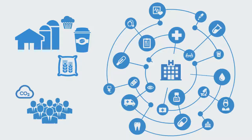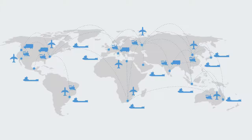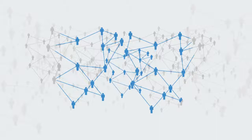Another example would be global supply chains, where we have to get many independent organizations across the value network to collaborate for the whole supply chain to function effectively. This supply chain has no real boundaries to it, and no one is in control of the whole organization. The same would be true for international politics and many other forms of complex organizations — there is no real boundary to them, making them quite different from our traditional well-bounded organizations.